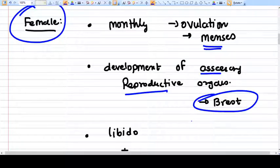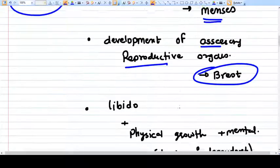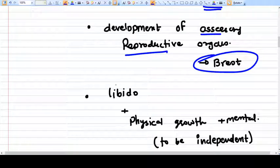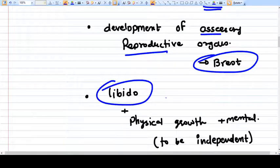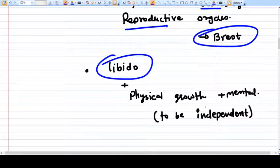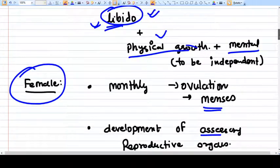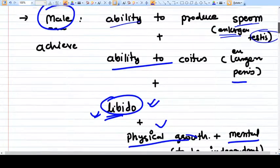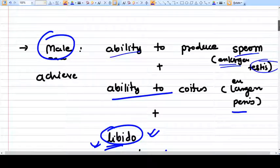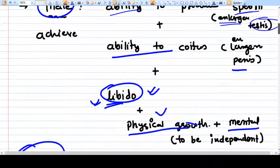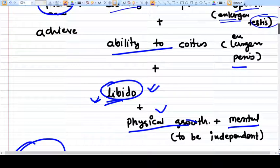As in the male part, libido and sexual thinking will increase. Physical growth and mental growth will increase to be independent in their further life. Puberty is transforming a child into an adult which can now survive independently with the help of growth spurt, mental growth, and ability for reproduction.